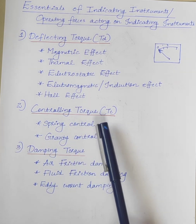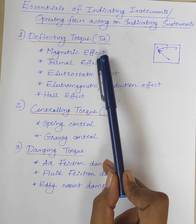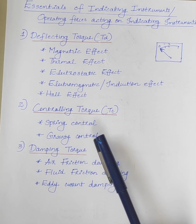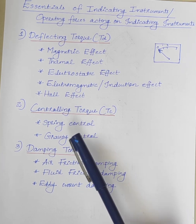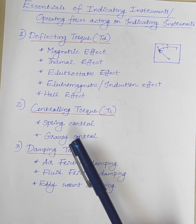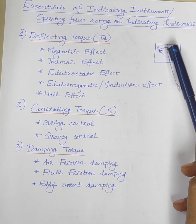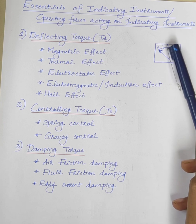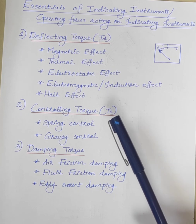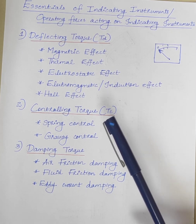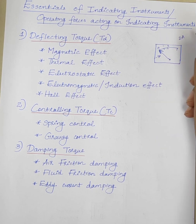Controlling torque Tc is the torque which opposes the deflecting torque Td. The controlling torque has two functions. The first one is to produce a force equal and opposite to the deflecting force at the final steady position of the pointer, in order to make the deflection of the pointer definite for a particular magnitude of current. For example, we have to measure 2A current.